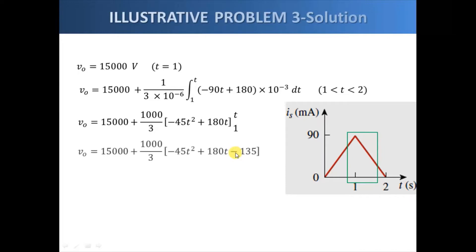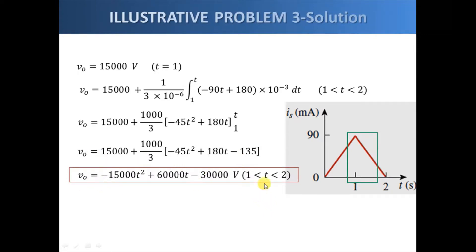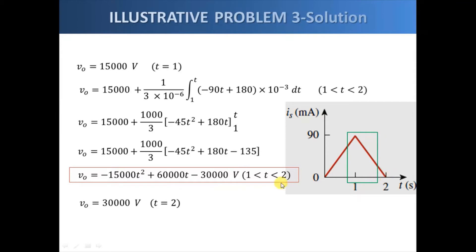Performing the integration and applying the limits, we get the voltage across the capacitor between one and two seconds. Simplifying, we get the final expression. At exactly t equals two seconds the voltage is 30,000 volts. So the voltage varies from zero to 15,000 volts as the current increases from zero to a maximum of 90 milliamps, and then keeps increasing to a maximum of 30,000 volts at two seconds as the current decreases back to zero.